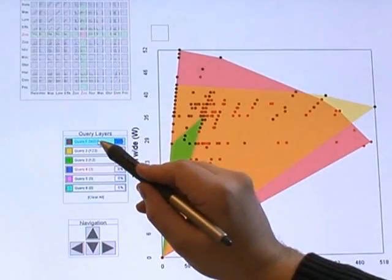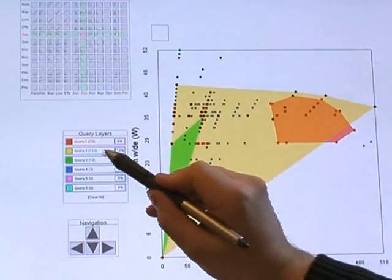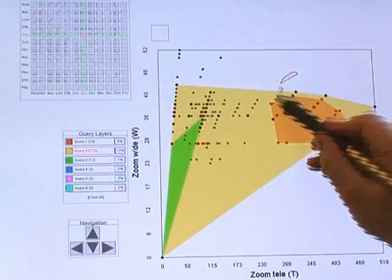The user next sculpts the red and yellow queries representing low and mid-budget cameras to include only those with high wide and telezoom ratings.